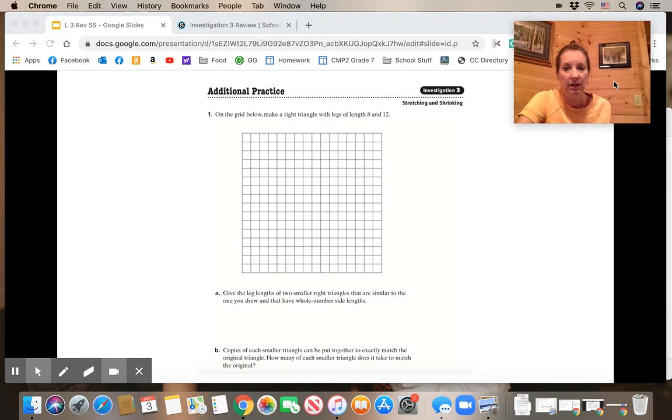All right, in the Investigation 3 Review, you are using the grid below to make a right triangle with leg lengths of 8 and 12. The leg lengths are the sides, the straight sides, not the diagonal part. So it wants an 8 and a 12 and then you would connect the two. Give the leg lengths of two smaller triangles that are similar to the one you drew and have whole number side lengths.